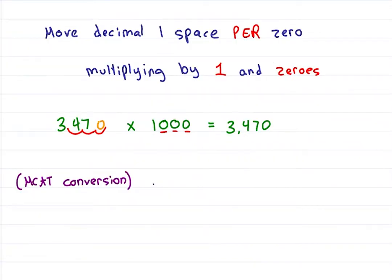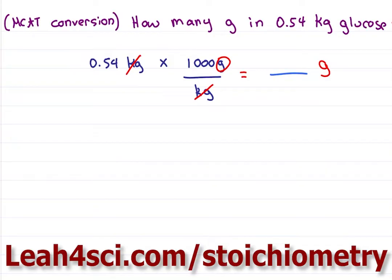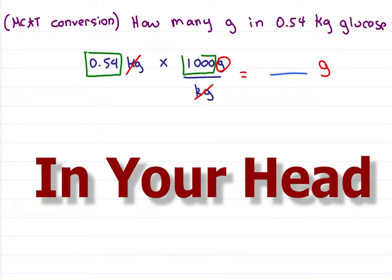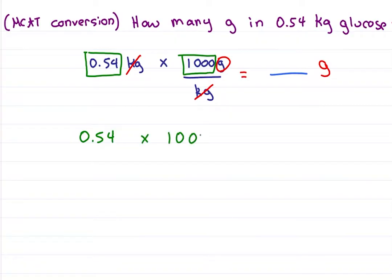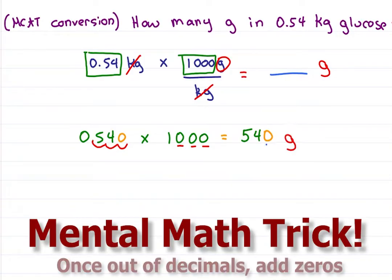What about a potential MCAT question asking how many grams in 0.54 kilograms of glucose? Here is the long way, as I teach in my stoichiometry series link below. But I want you to be able to do this quickly in your head. 0.54 times 1000, three 0s, move the decimal three spaces to the right, fill in the missing 0, for a final answer of 540 grams. The trick to do in your head is recognize that 0.54 only has two decimal spaces and so you have to add a 0 for the third decimal space.